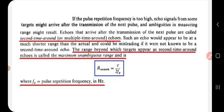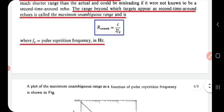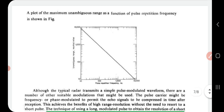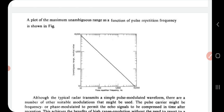The range beyond which targets appear as second-time-around echoes is called the maximum unambiguous range, and is given by R_max = c / (2·fp), where fp is the pulse repetition frequency expressed in hertz. There is also a plot of maximum unambiguous range as a function of pulse repetition frequency.